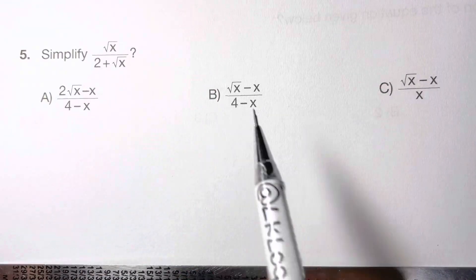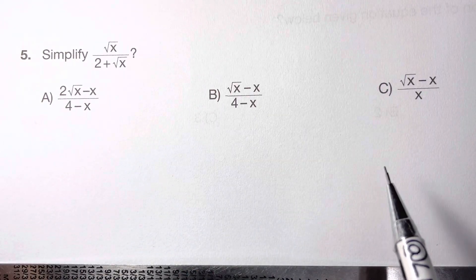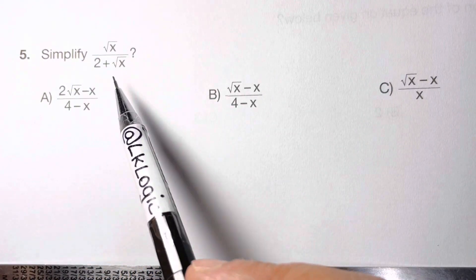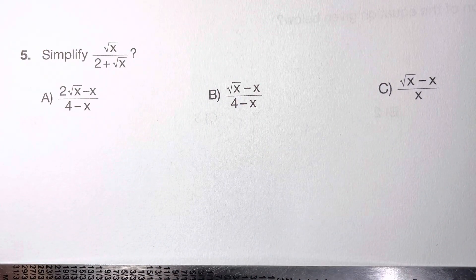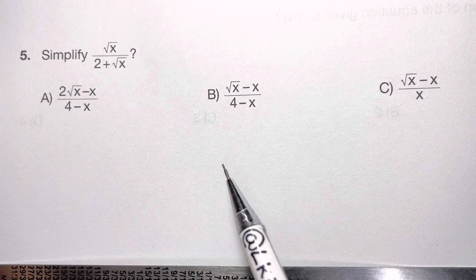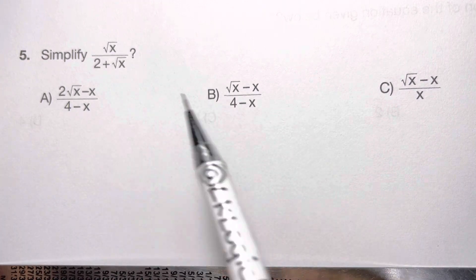Hi everyone, back with another math olympiad question. You have to simplify root x over 2 plus root x. So how are we going to solve that? The question looks very complicated, but solving is very very easy.